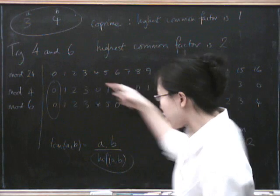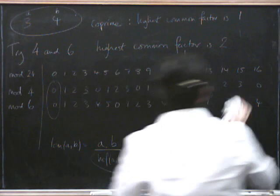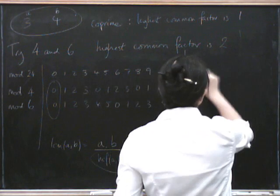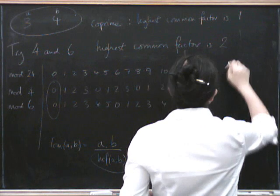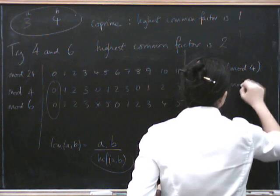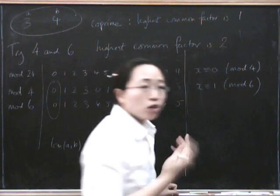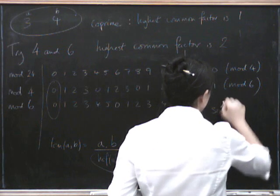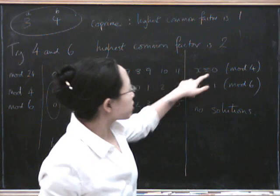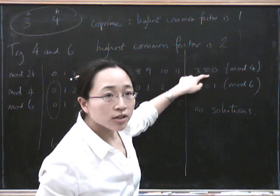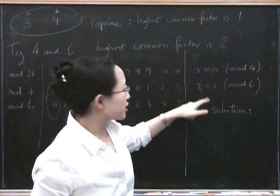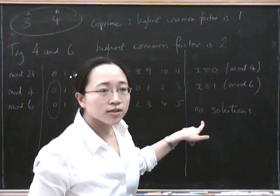So let's write this down. For example, if we have x is congruent to 0 mod 4, and x is congruent to 1 mod 6, that's not possible. This has no solutions, which should be obvious because if you're 0 mod 4, you're even. And if you're 1 mod 6, then you're odd. Right? So you can't be simultaneously odd and even. So there are no possible solutions to this thing.